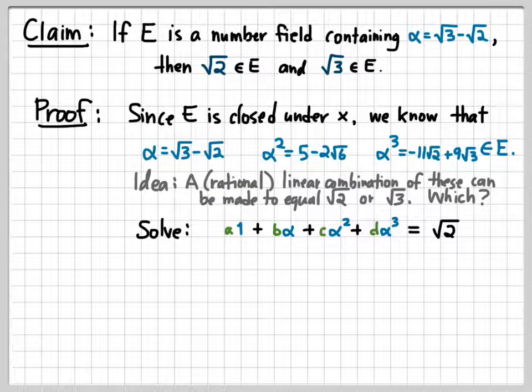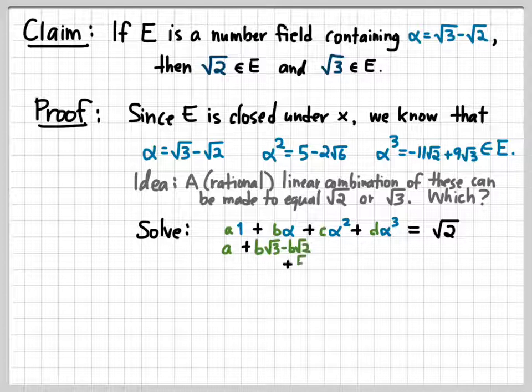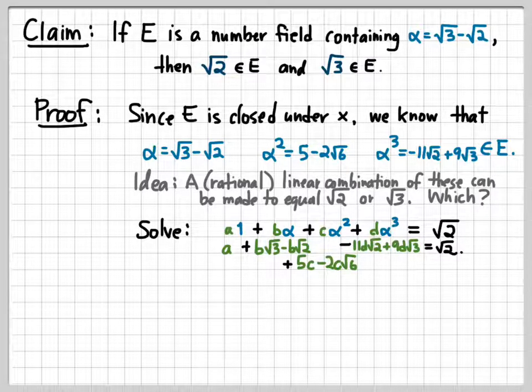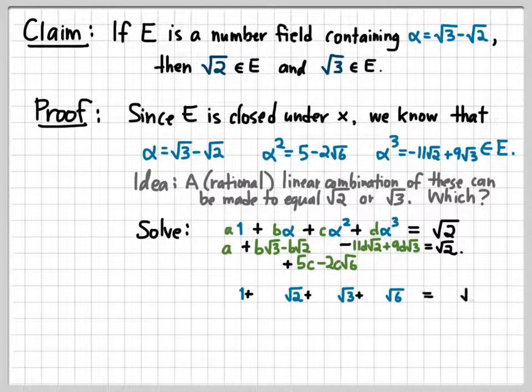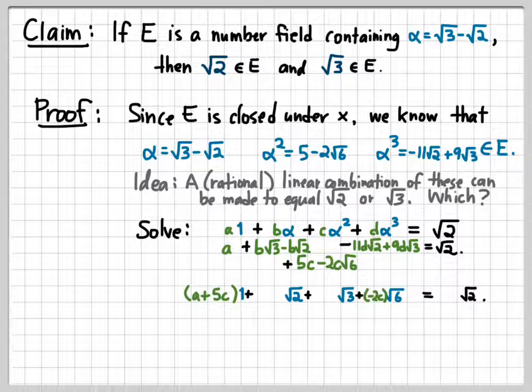So a, b, c, and d here should be rational numbers. Well, let's plop in what we computed α, α², and α³ to be, and then collect all of our coefficients. Instead of by 1, α, α², and α³, now let's collect them together by 1, √2, √3, and √6. When we do that, the coefficient of 1 is a + 5c, the coefficient of the √6 is -2c, the coefficient of the √2 is -b - 11d, and the coefficient of the √3 is b + 9d.